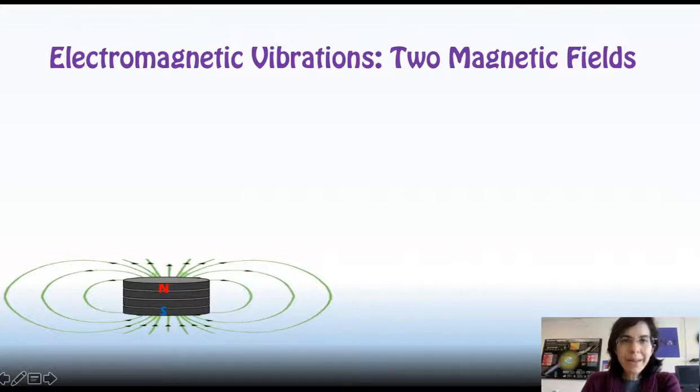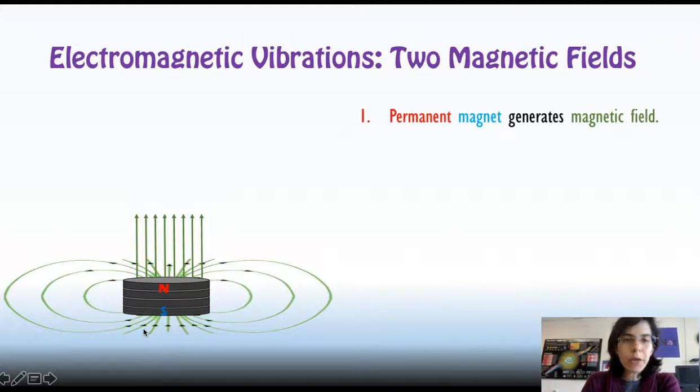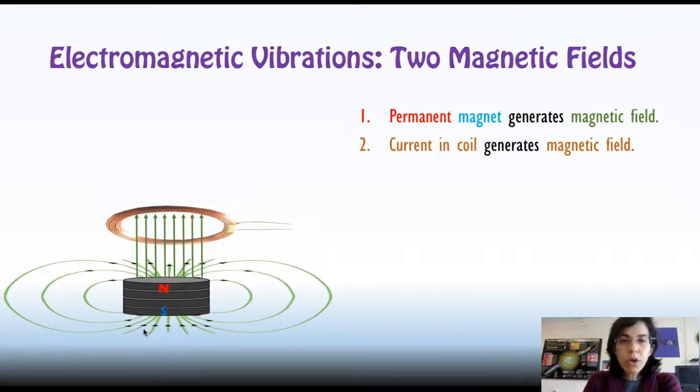To vibrate something several thousand times per second, we are going to use two magnetic fields. And the first is going to come from a permanent magnet. Magnetic field going from north to south. The second magnetic field that we have keeping it company, we will build in a coil of wire. How are we going to get a magnetic field in a coil of wire? Run a current through it.